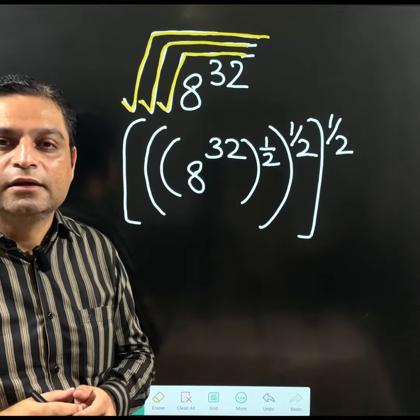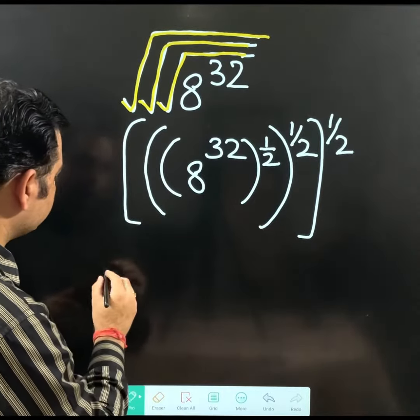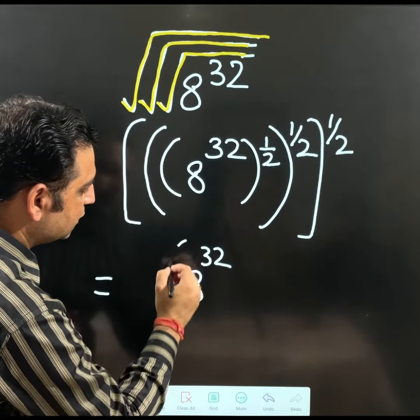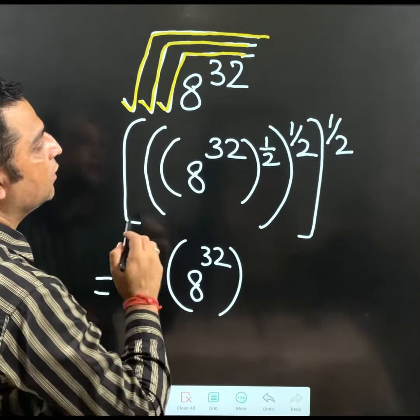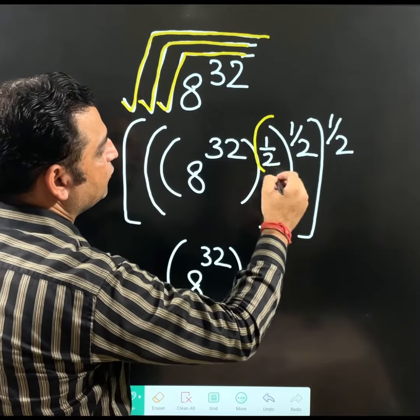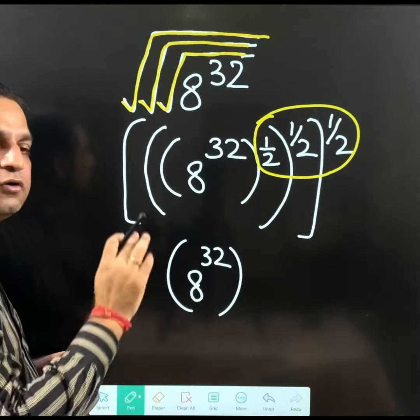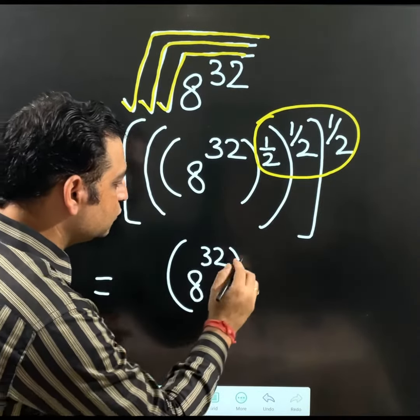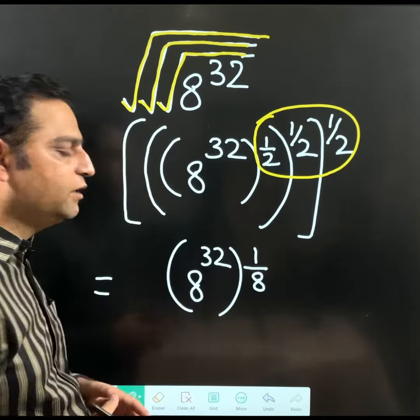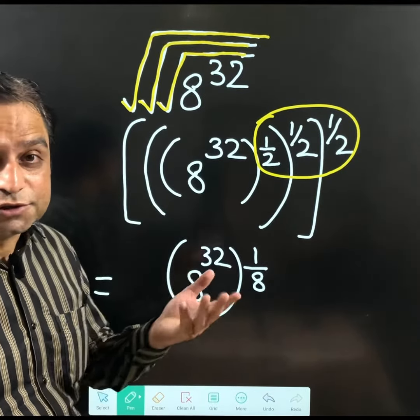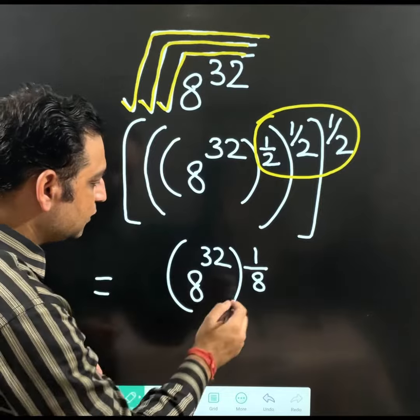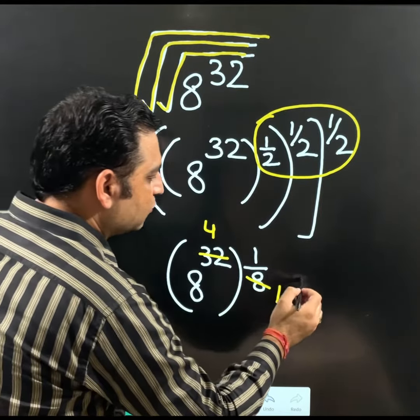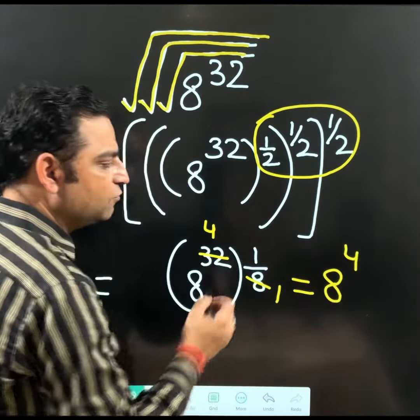Both are same. But using exponents rule, what is going to happen? This 8 to the power 32. Let it be as it is. Now, multiply all these exponents. 1 over 2 multiplied with 1 over 2 multiplied with 1 over 2. You will get 1 over 8. Makes the question easy. Now, see this 8 and 32 can also be cancelled. Your final answer would be 8 to the power 4.